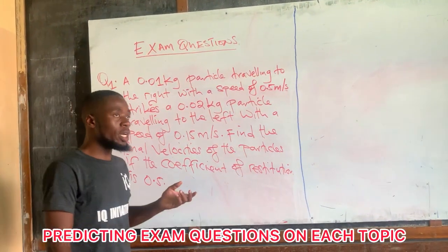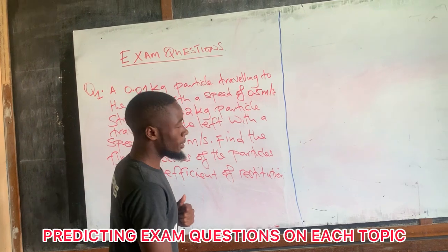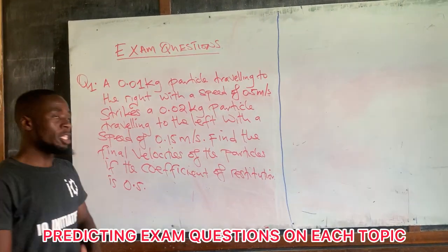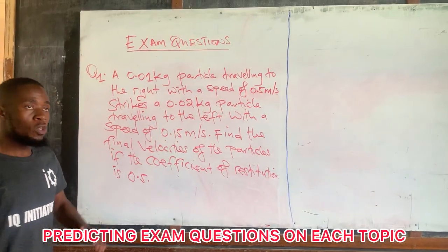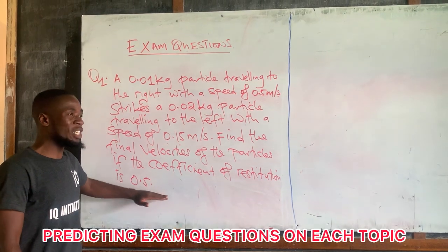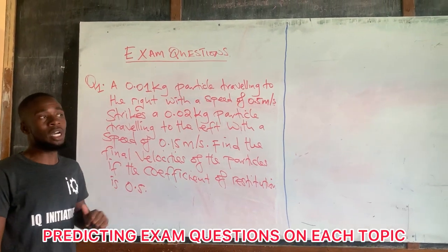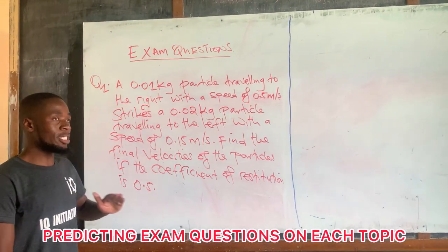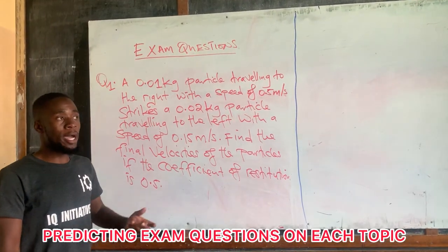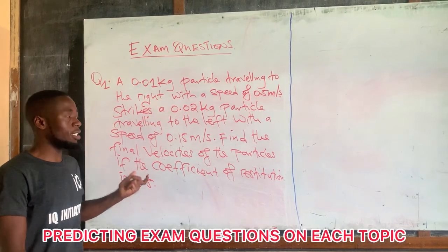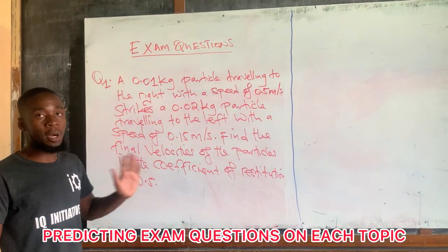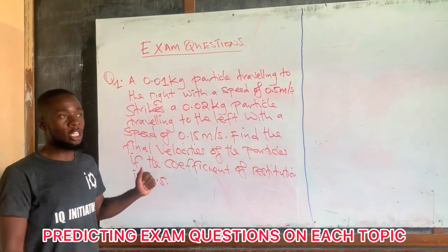The first thing we need to understand here is what type of collision is this one. When the coefficient of distribution is less than one — anything less than one — there is a partial or semi-elastic collision. So this is a semi-elastic or partial elastic collision.